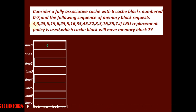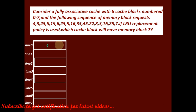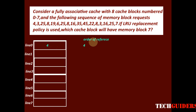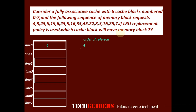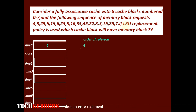First we have the request for memory block 4; we keep it in cache line 0. We shall keep an order of reference so that we can easily find out the least recently used memory block.